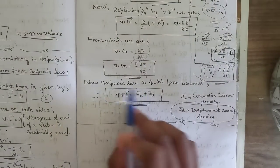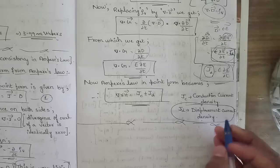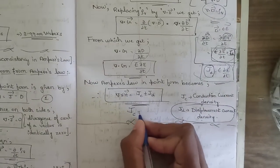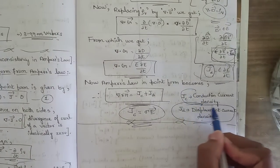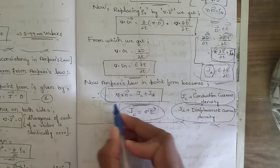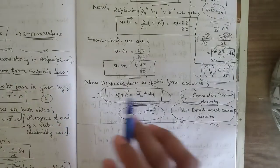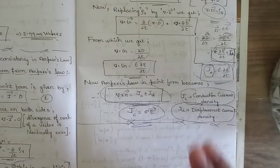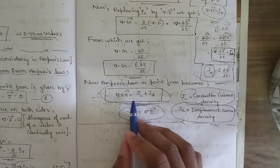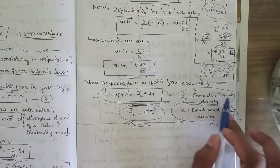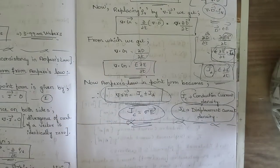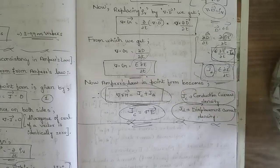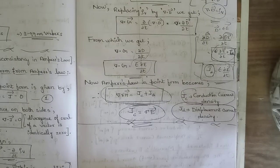The final amended Ampere's law in point form is ∇×H = Jc + Jd, where Jc = σE is the conduction current density and Jd = ε(∂E/∂t) is the displacement current density. This is Maxwell's equation in point form accounting for time-varying fields. Please like, share, subscribe and refer our playlists for all previous modules.